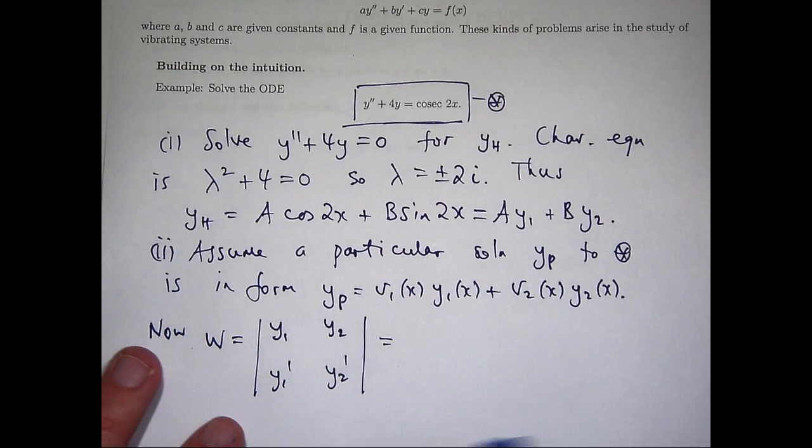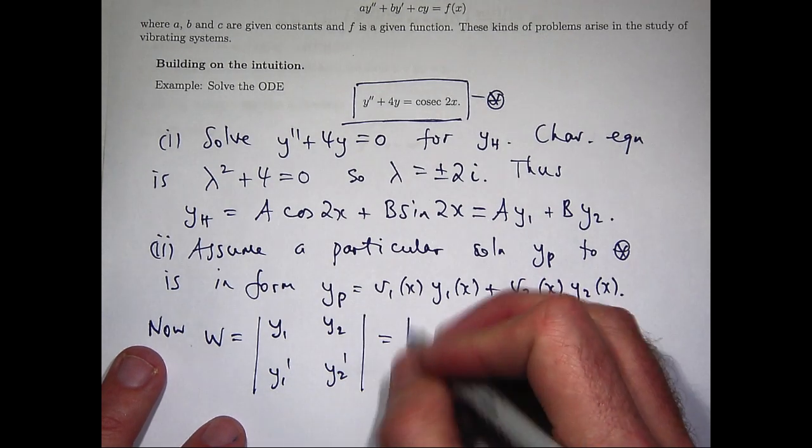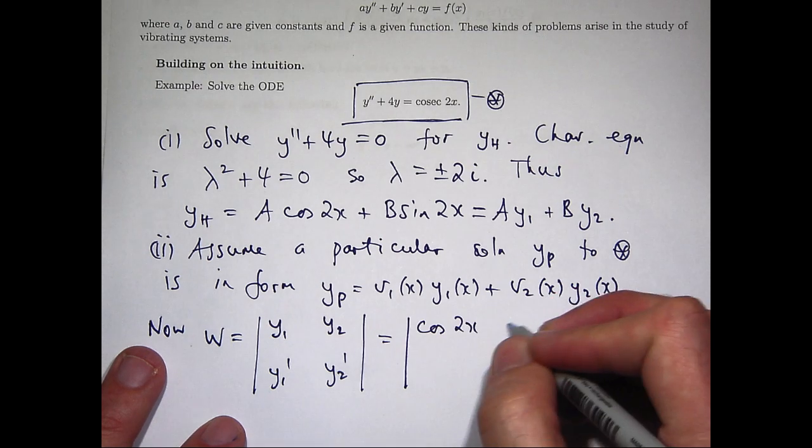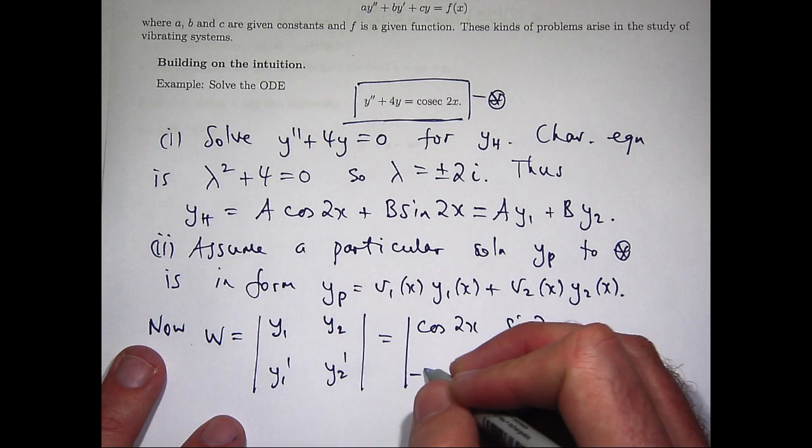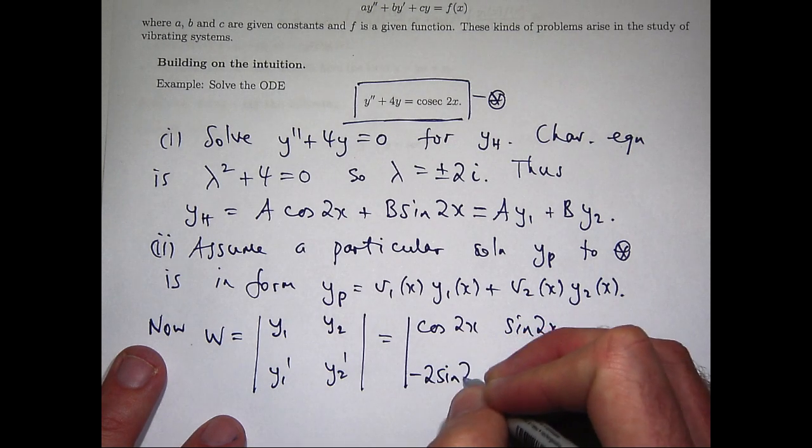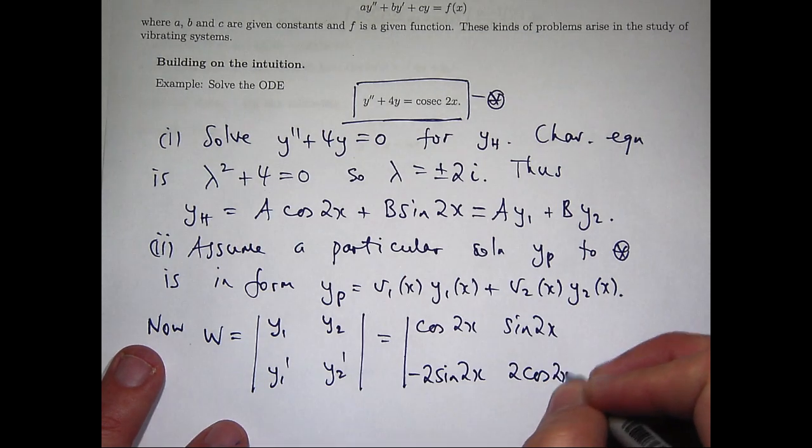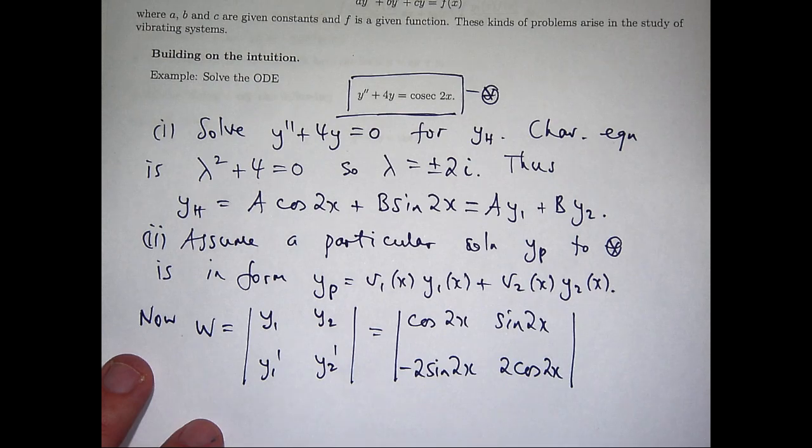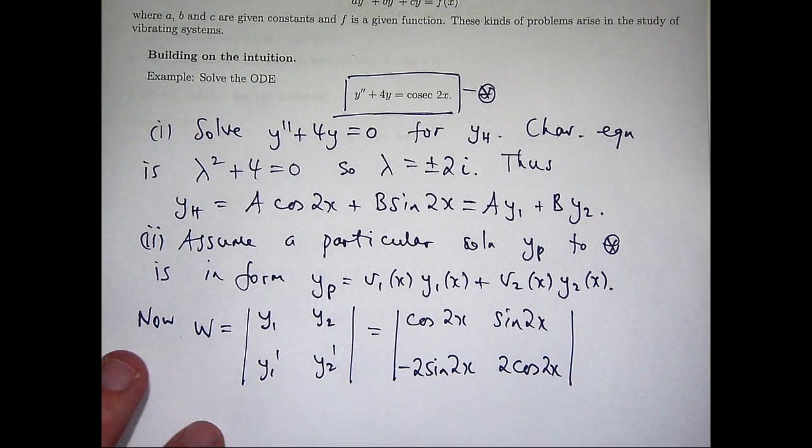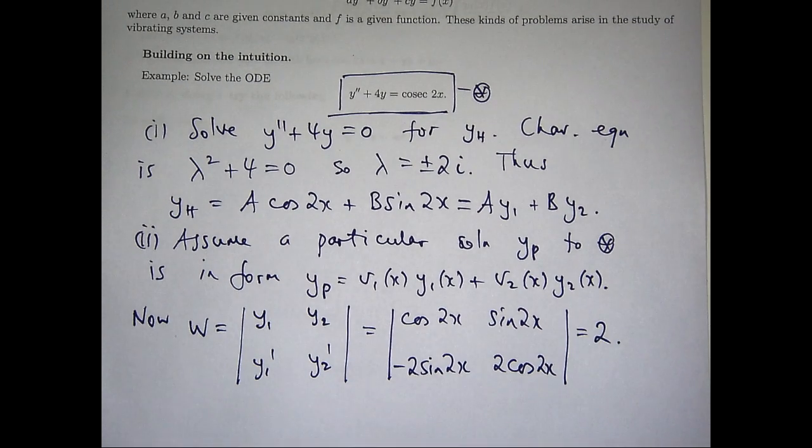So the Wronskian is just the following. This is how I remember it. It's a determinant of this. Now y1 in this case is cos(2x), and y2 is sin(2x). And if I differentiate cos(2x), I'll get -2sin(2x). And if I differentiate sin(2x), I'll get 2cos(2x). So then if I cross multiply that times that minus that times that, I can use cos² + sin² = 1, and I'll get 2 as my Wronskian.